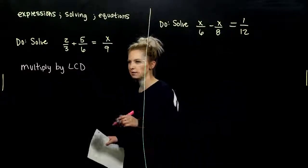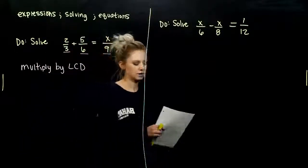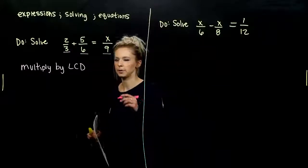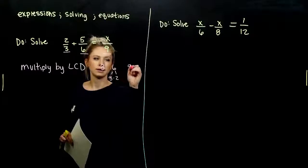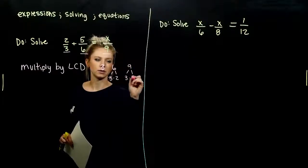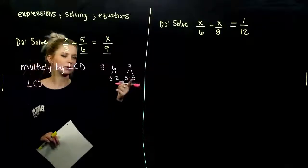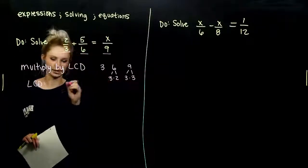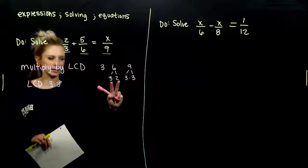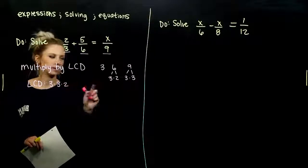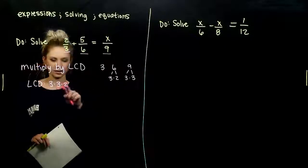Multiply by the LCD clears out all of those denominators. So let's find the LCD between 3, 6, and 9. Might be right off the bat you can jump there, but let's break it down a little bit. So 3 is prime, 6 we can break into 3 and 2, and 9 is broken into 3 and 3. So our LCD has to be divisible by all of them.